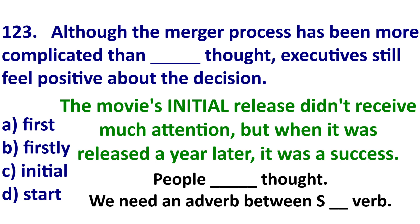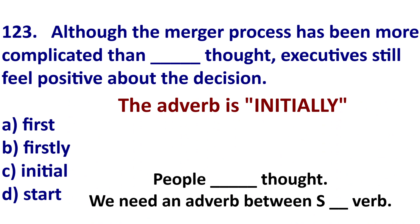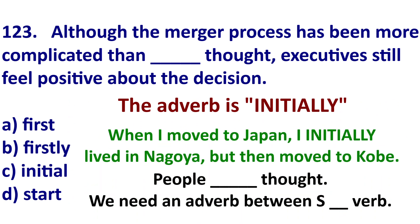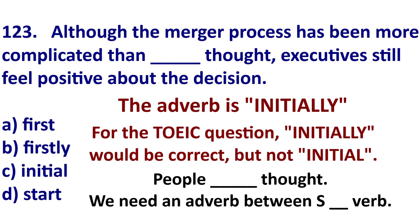The adverb for 'initial' is 'initially.' For example, when I moved to Japan, I initially lived in Nagoya. So my initial city was Nagoya — I initially lived in Nagoya, but soon moved to Kobe. So if you had 'initially thought,' that would be correct. But 'initial' is just an adjective.